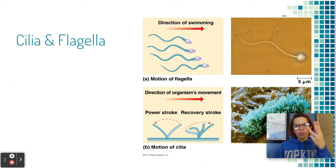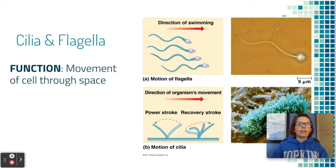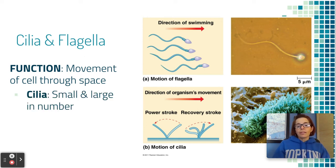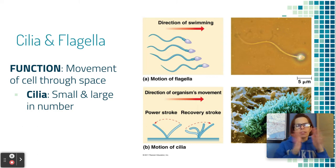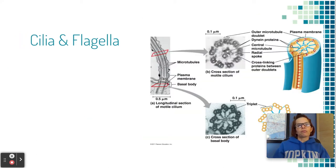Microtubules are important in three main structures in the cell. First, cilia and flagella — these are outside the cell and are super important for allowing a cell to move through space. The flagellum (singular; flagella plural) is like a whip-like tail that projects the cell through space. Cilia are similar but much shorter, and you usually have lots of them — they beat to move the cell. Flagella, usually one to three per cell, wave back and forth to move the cell.